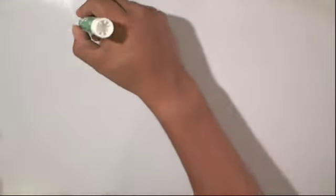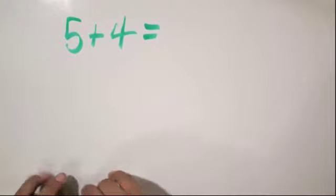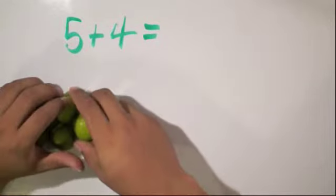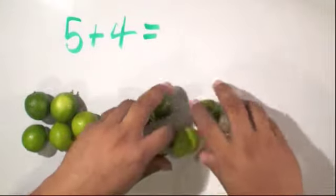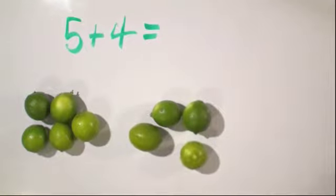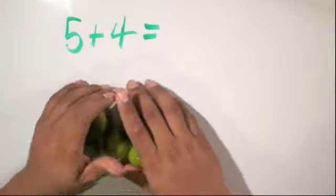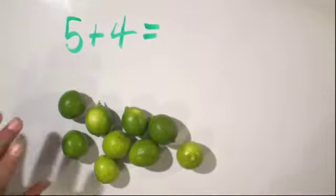Say, for example, we have 5 plus 4. Now, what does that mean? Well, visually, we can look at this and say we have 5 limes and we wanted to add 4 of them. To answer this question, we would combine them together and then count how many we have in total.